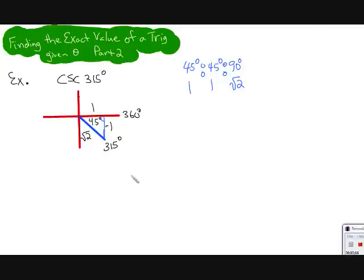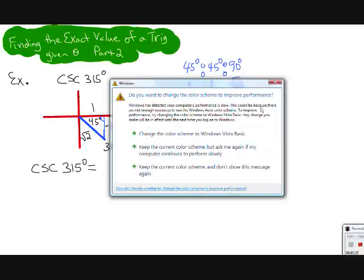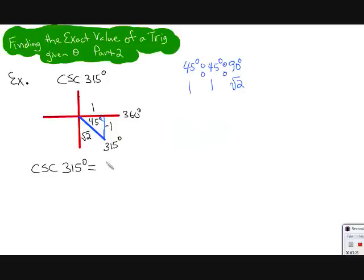Now we're ready to continue. Cosecant is a certain ratio. Cosecant is the reciprocal of sine. Sine is hypotenuse over opposite. And this is something that you have to remember.